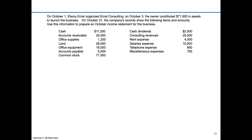Hi everyone. Today we're taking a look at an alternate version of exercise 1-8. The problem reads: on October the 1st, Ebony Ernst organized Ernst Consulting. On October the 3rd, the owner contributed $71,500 in assets to launch the business. On October the 31st, the company's records show the following items and amounts. Use this information to prepare an October income statement for the business.